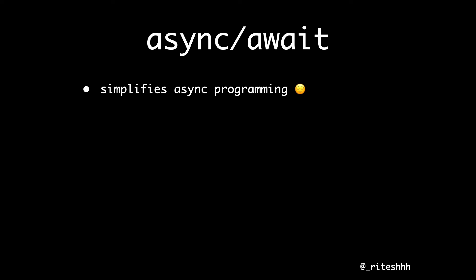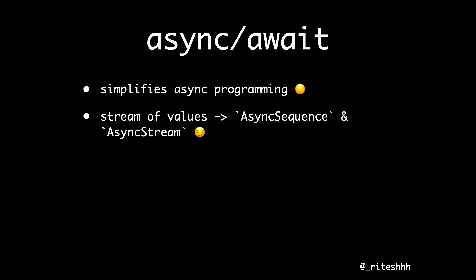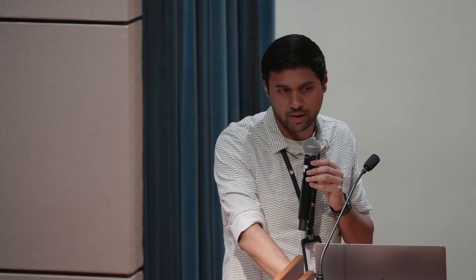Async/await — we won't talk about the concurrency aspects in this talk, but rather look through the lens of Combine: how async/await can do what we're thinking in Combine. First, it simplifies async programming. We can also have streams of values using async/await via APIs like AsyncSequence and AsyncStream. It revolves around a new concurrency model. It also has in-house error handling via try-catch, which we're all familiar with. And finally, it gives you cancellation via the Task API.